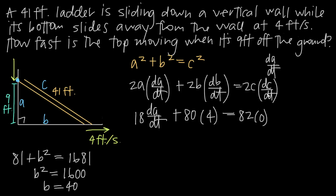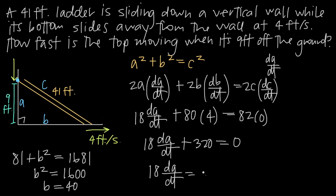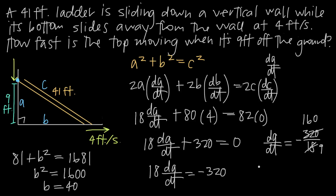The only unknown remaining is dA/dt. Simplifying: 18 times dA/dt plus 80 times 4 is 320, equals 0. Subtracting 320 from both sides gives 18 dA/dt = -320. Dividing both sides by 18, we get dA/dt = -320/18, which reduces to -160/9. The decimal approximation is dA/dt ≈ -17.7 feet per second.